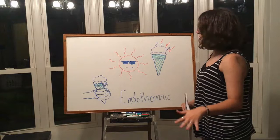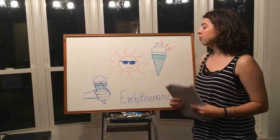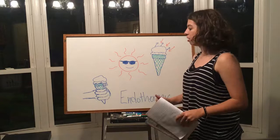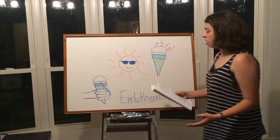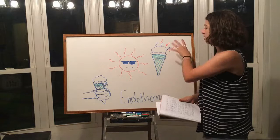An example of endothermic: on a hot sunny day, you get some ice cream and notice it starts to melt. This is endothermic because the cold ice cream absorbs heat from the surroundings, causing it to melt. It's also an example of thermal equilibrium — it melts because it tries to equalize the temperatures of cold and hot.